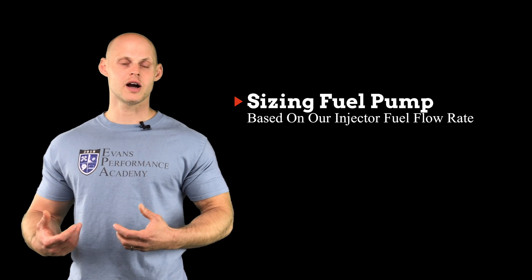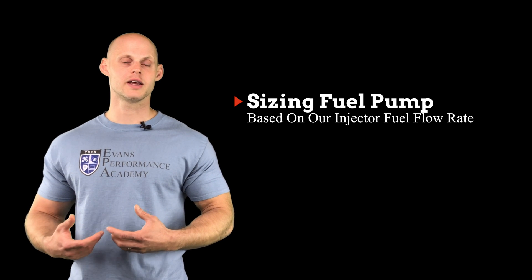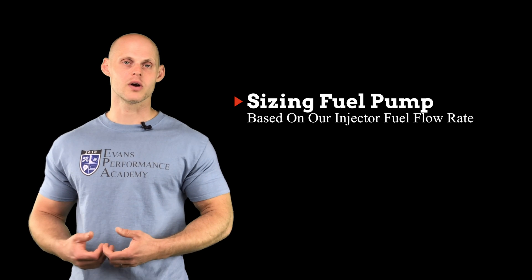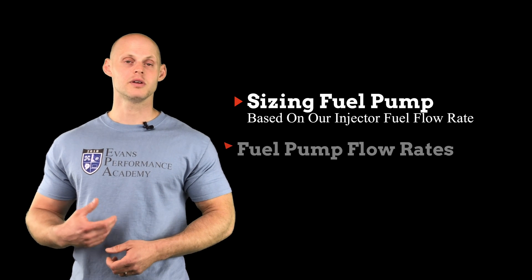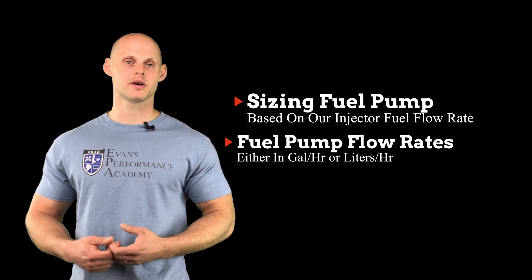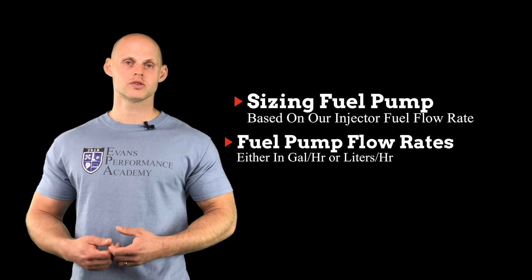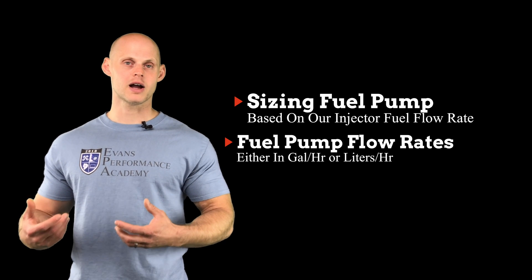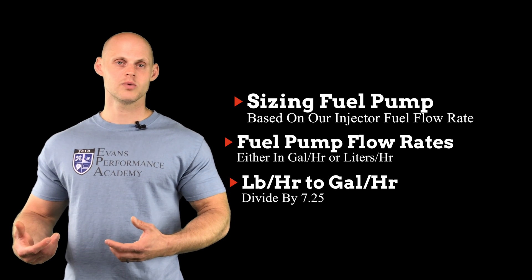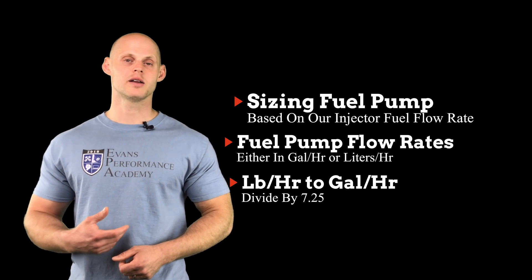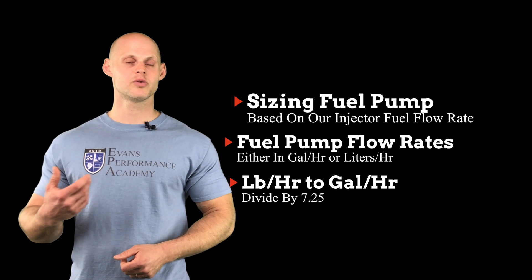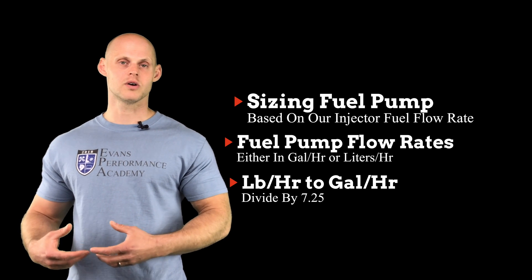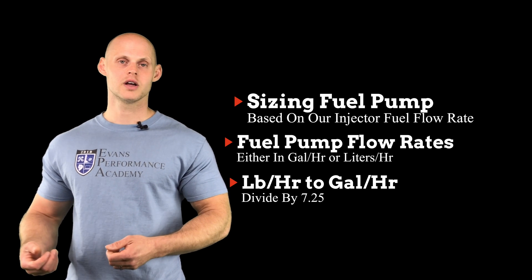Fuel pumps are not going to be rated in units of pound per hour. They're either going to be in gallons per hour or liters per hour. So in order to convert pound per hour to gallons per hour, we're going to simply divide by 7.25, which is going to convert the units into gallons per hour.